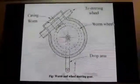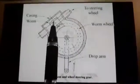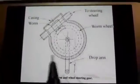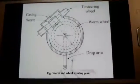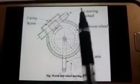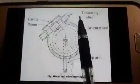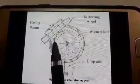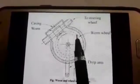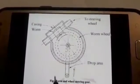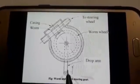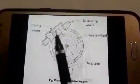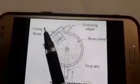The worm and wheel steering gear consists of a worm and a worm wheel. In place of a worm wheel, we can also use a sector. This worm is connected to the steering wheel, so the driver applies rotation to the steering wheel. The spindle of the worm wheel is connected to the drop arm. The worm, worm wheel, and steering linkages are all contained in a single casing.